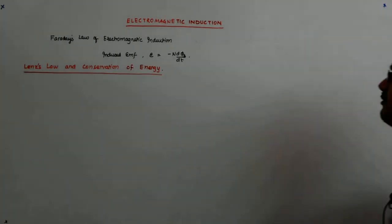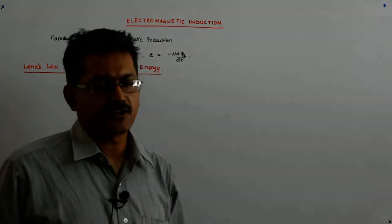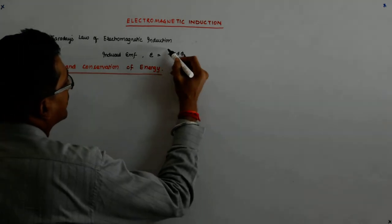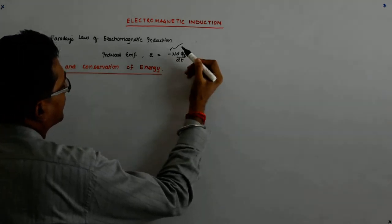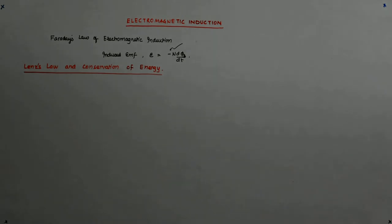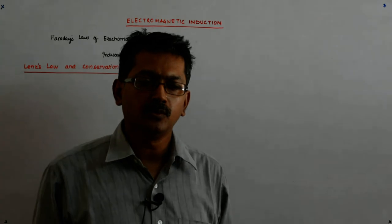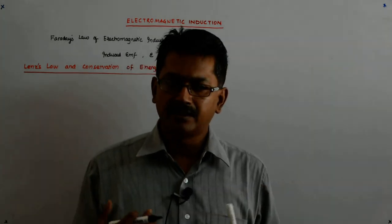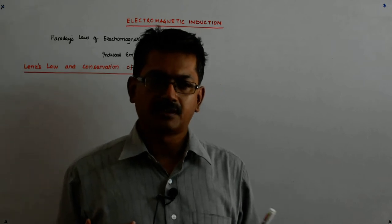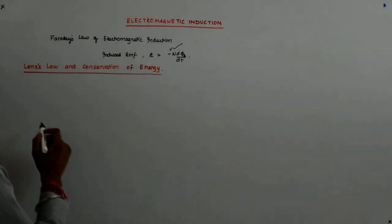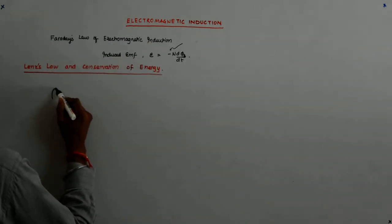While writing Faraday's law of electromagnetic induction, I had discussed that the negative sign in this formula is due to a specific reason. While discussing experiment one, I had also told you we will come back to it and find out why the direction of the current was in a particular direction when the magnet was moving in one particular direction.